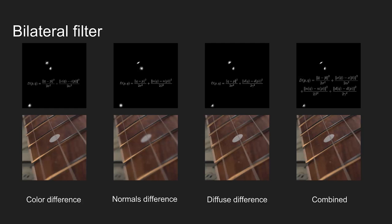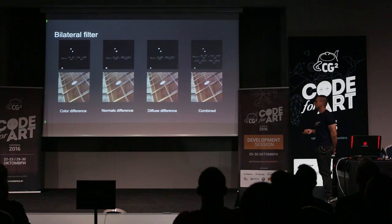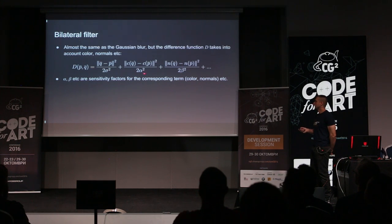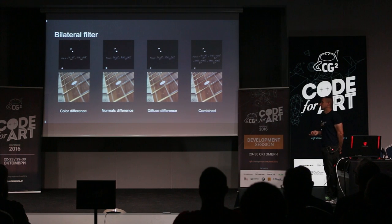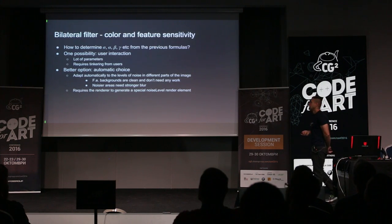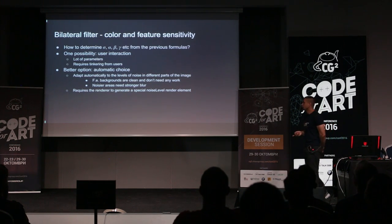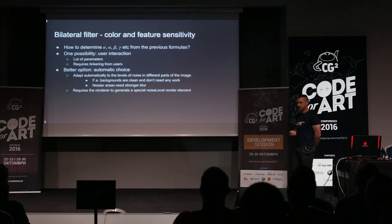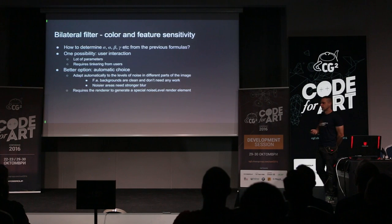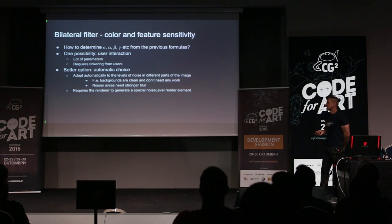If that works so well, the question is how to choose the different scaling parameters in the formula. One way is to leave them for the user, but that would require five or six numbers with no meaning to the user. The better option is to make this choice automatic — choosing parameters so that clean parts of the image remain clean, while we only remove noise from noisy parts. To help with that, we can request the renderer to tell us which parts of the image are noisier.